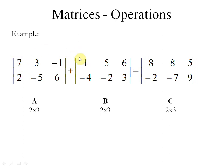The method to add matrices is to add the first element to the first element: 7 plus 1 is 8, 3 plus 5 is 8, minus 1 plus 6 is 5, 2 minus 4 is minus 2, minus 2 minus 5 is minus 7, and 6 plus 3 is 9. Each entry of the first matrix is added with the corresponding entry of the second matrix — first with first, second with second, third with third — giving a resultant matrix of the same 2×3 order.